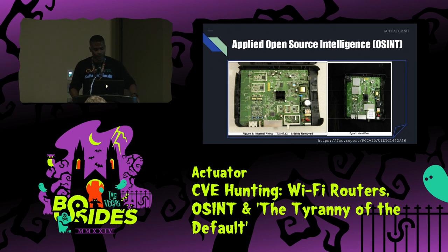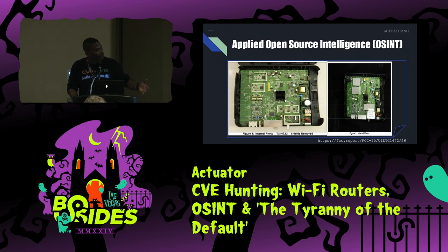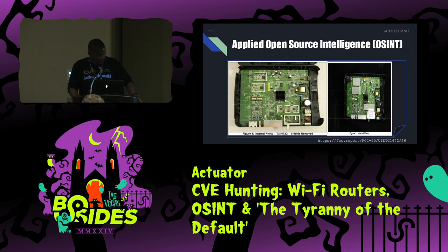Now we're going to go into the methodology. A lot of people are aware that in the United States, all wirelessly emitting devices have to meet certain specifications. Because of that, we can get a wealth of knowledge by looking at the aggregator report. If you go to FCC.io or FCC report, you can find public records — you can see internal and external schematics. You can get a lot of information that is surprisingly available.